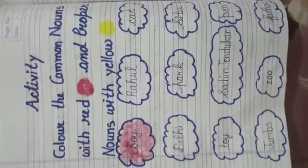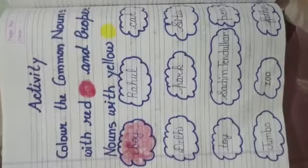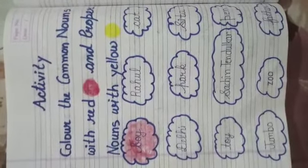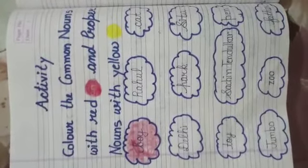And next is Rahul. Rahul is the name of a special boy, a particular boy. So Rahul is a proper noun. So we will color it with yellow.